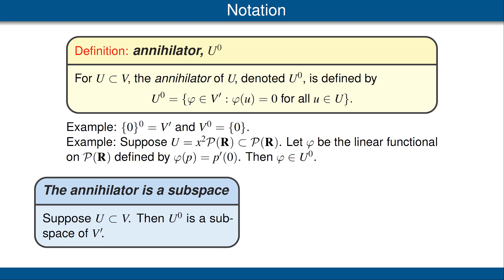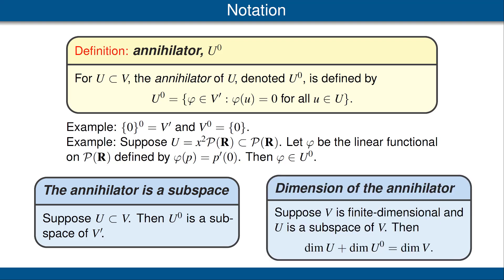The next result states that if U is a subset of V, then the annihilator of U is a subspace of the dual of V. This is very easy — make sure you understand why it's true. Our next theorem says that if V is finite dimensional and U is a subspace of V, then the dimension of U plus the dimension of the annihilator of U is equal to the dimension of V. Please be sure to read the proof of this result in the book.